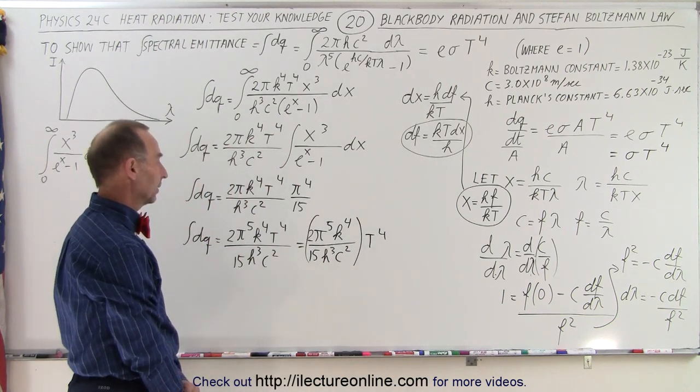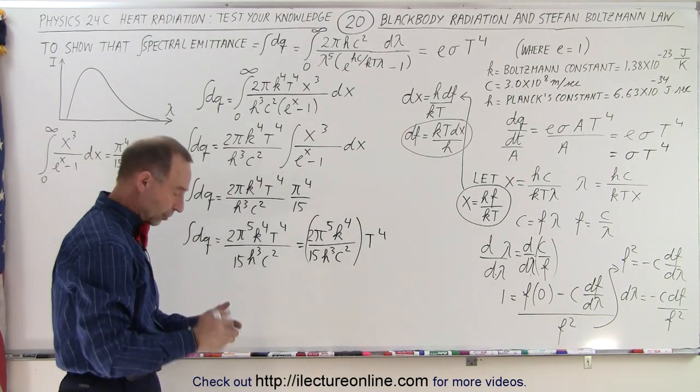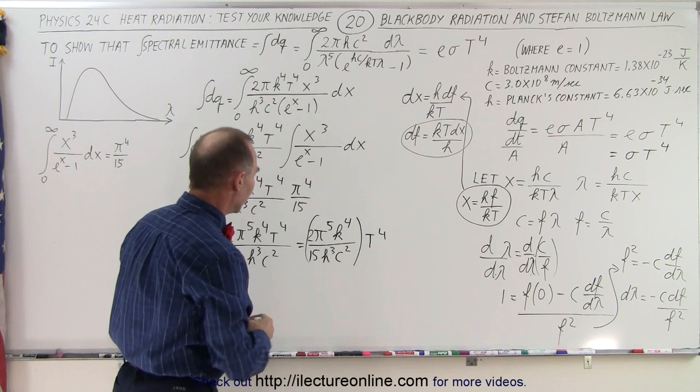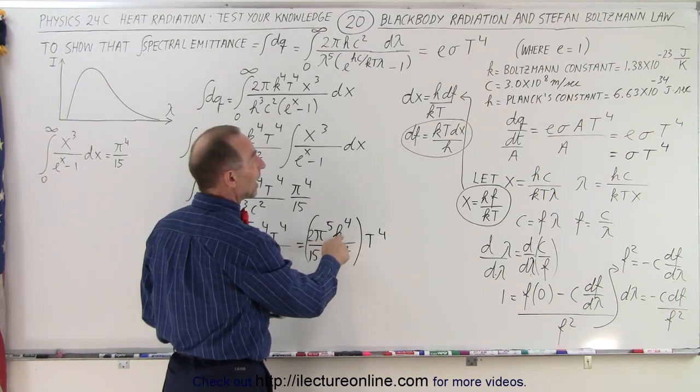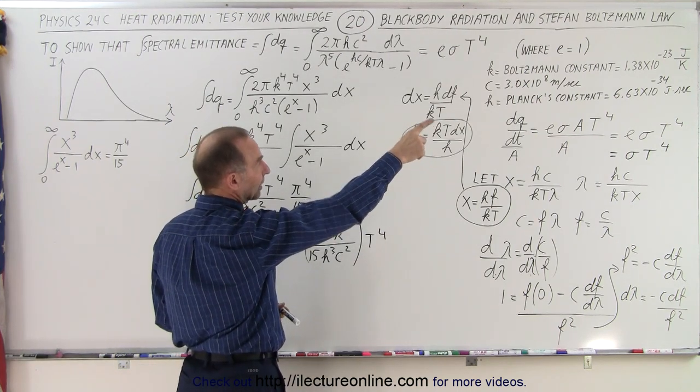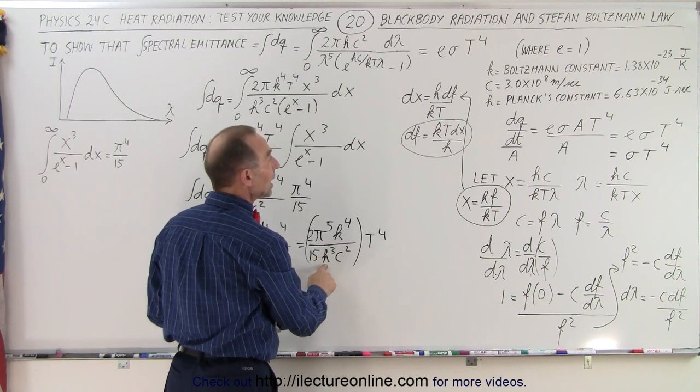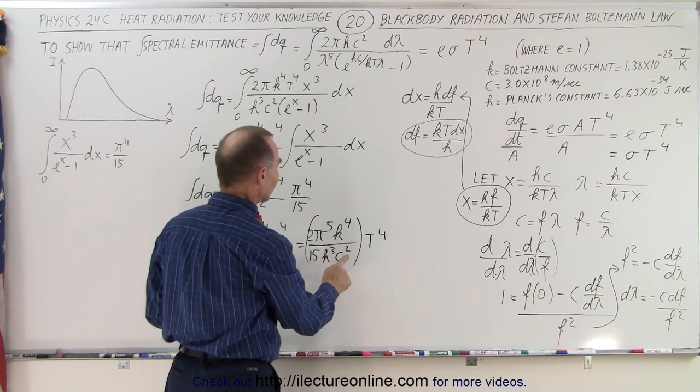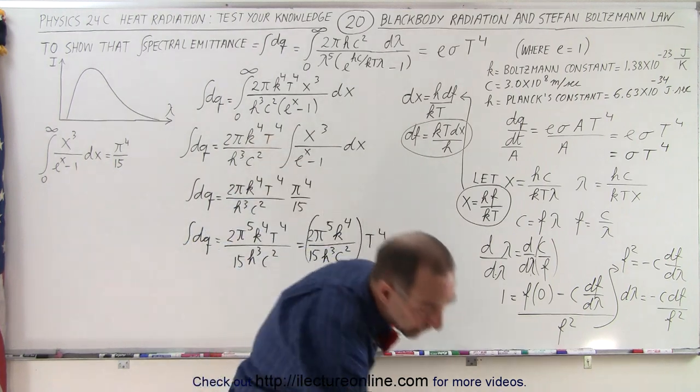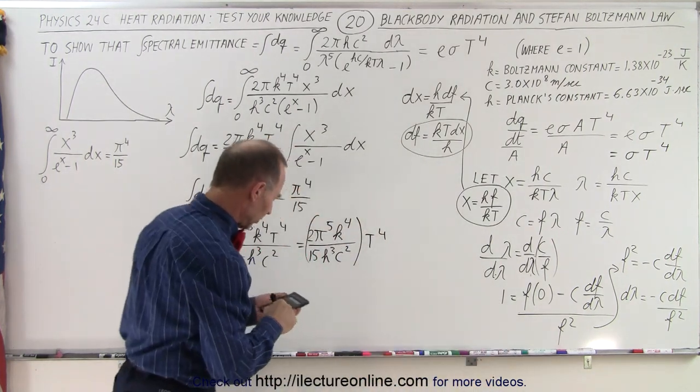All right, let's find out if that's correct. So with a calculator, now remember, π we all know what that is, k is 1.38 times 10 to the minus 23, h is going to be 6.63 times 10 to the minus 34, and c is the speed of light. Okay, let's see what that's equal to.